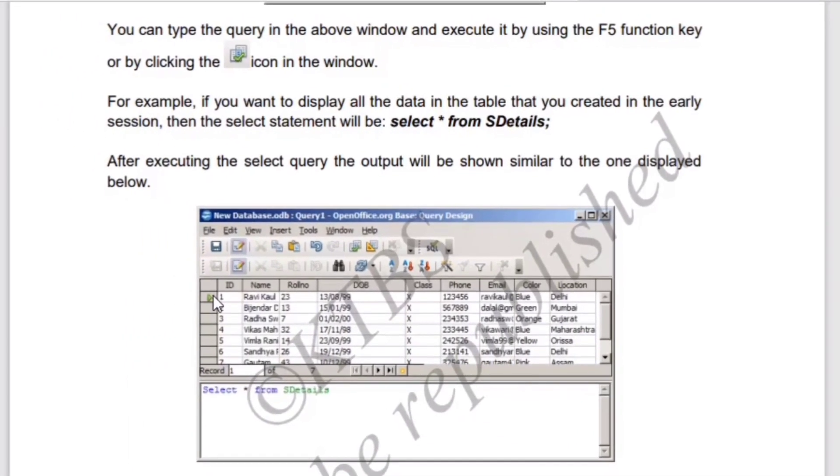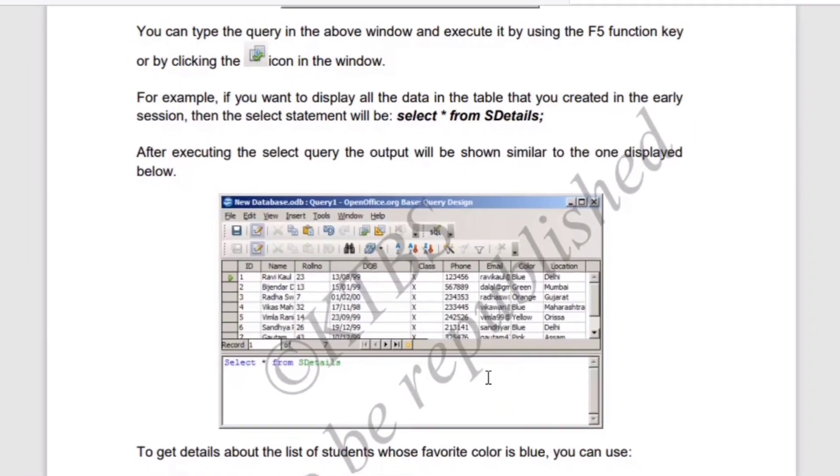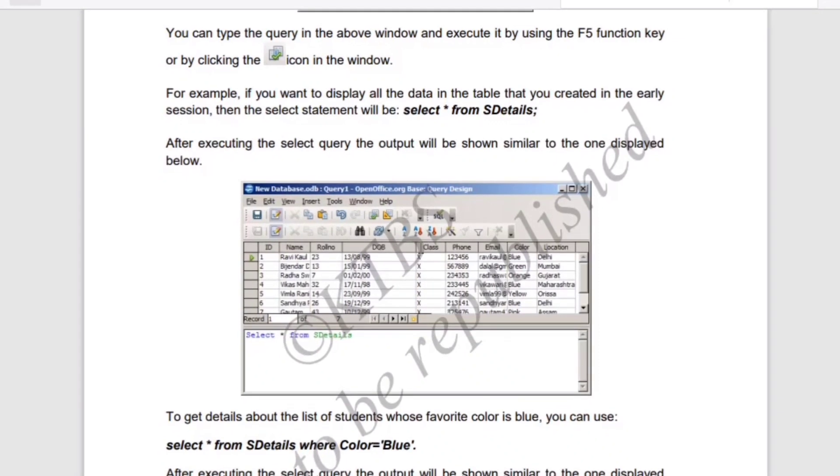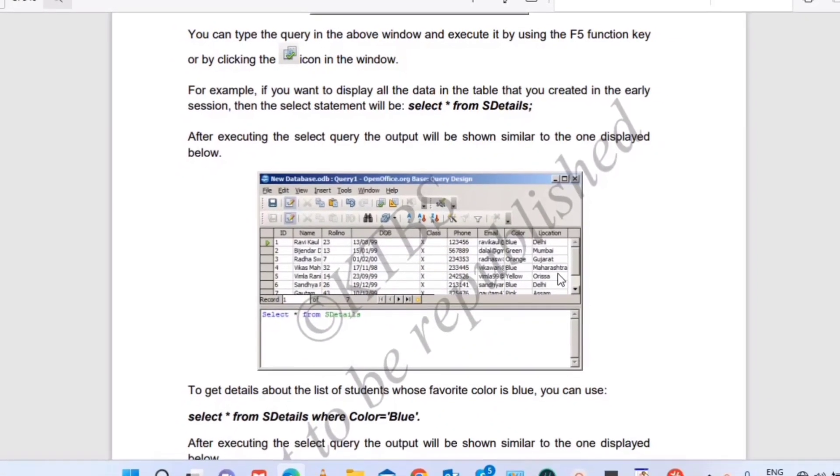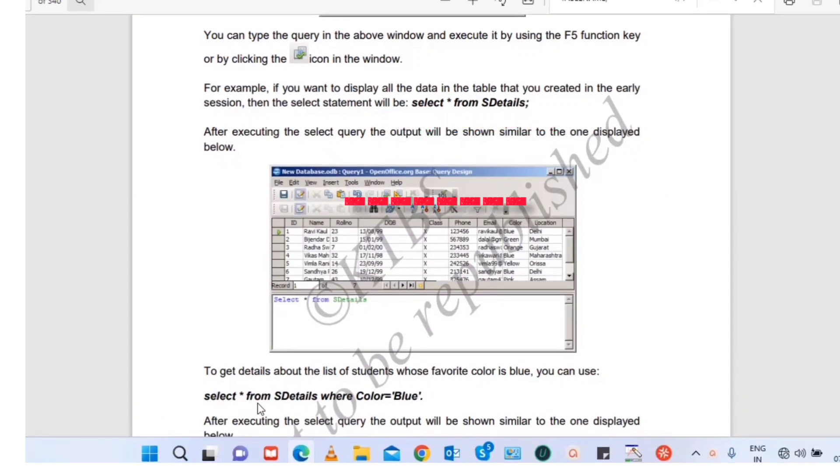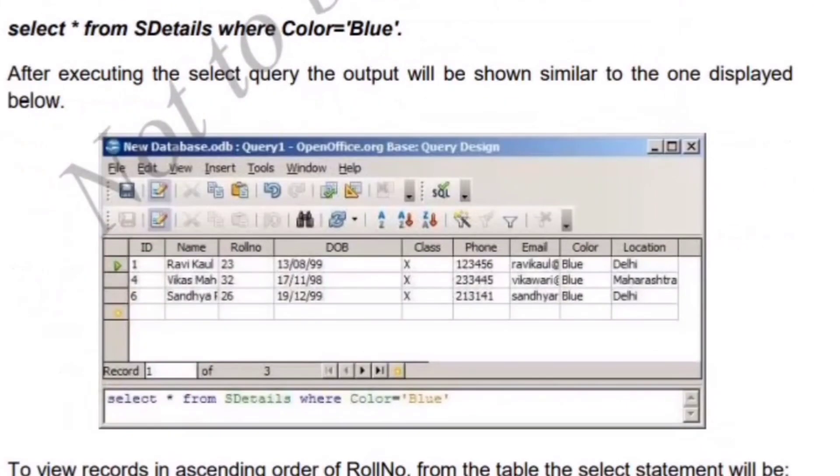While writing an example for select statement, write a simple table that includes ID, name, role number, date of birth, class, phone, email, color, location, etc. as shown here. And then write an example syntax like SELECT * FROM student_details WHERE color = 'blue'.